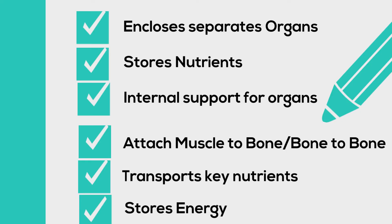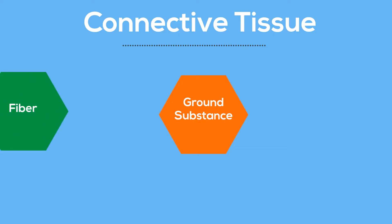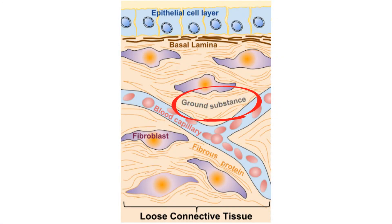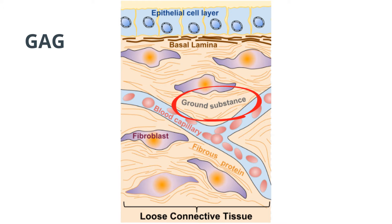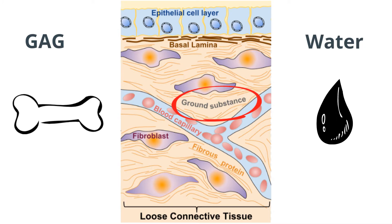There are three elements of connective tissue: ground substance, fibers, and cells. Ground substance consists of large molecules, abbreviated GAGs, which link together to form even larger molecules. Ninety percent of ground substance is made up of water and fills the space between fibers and cells. In bone, the ground substance includes minerals, and in blood, the ground substance is plasma.